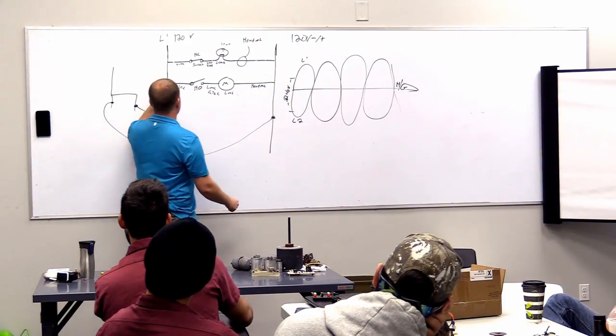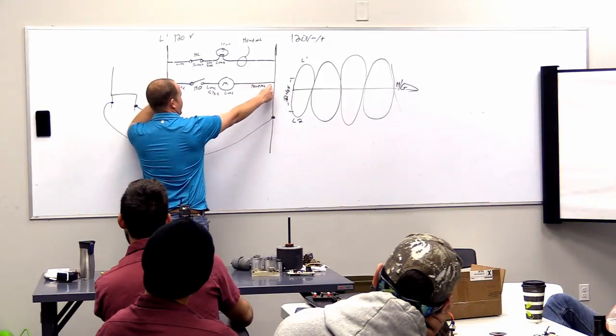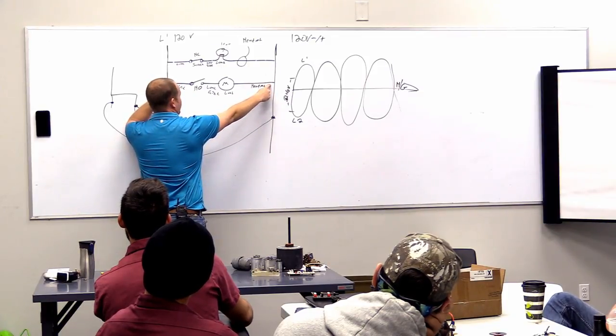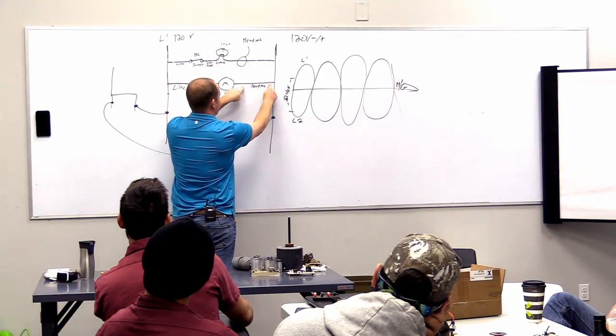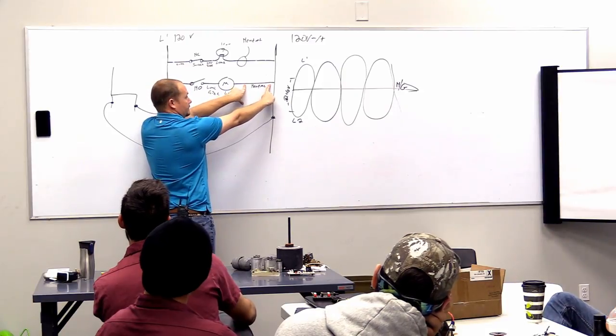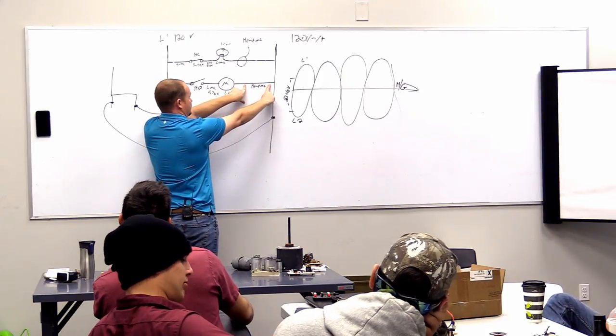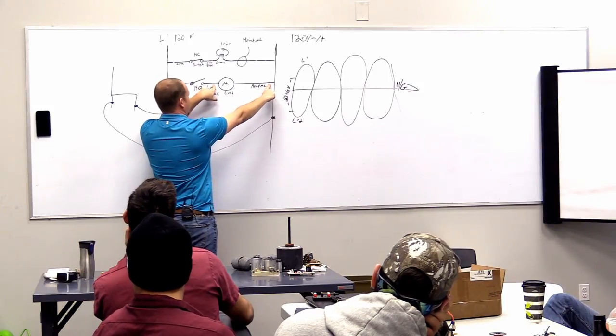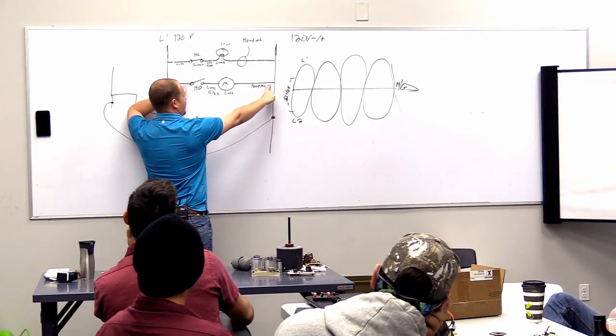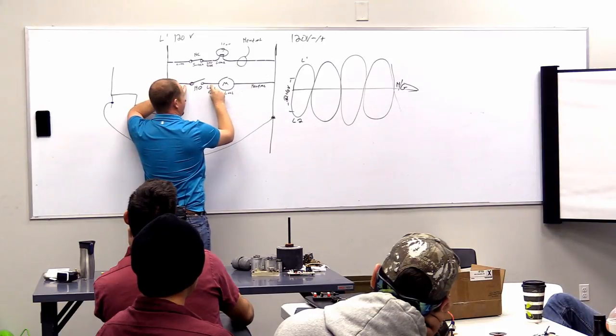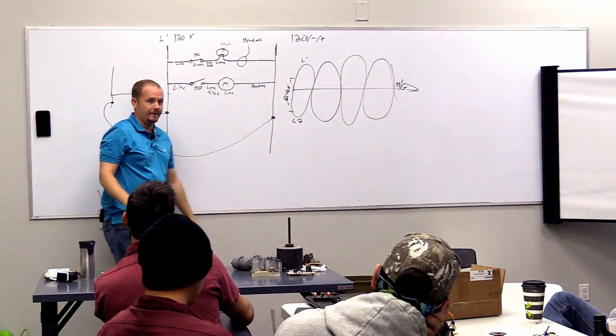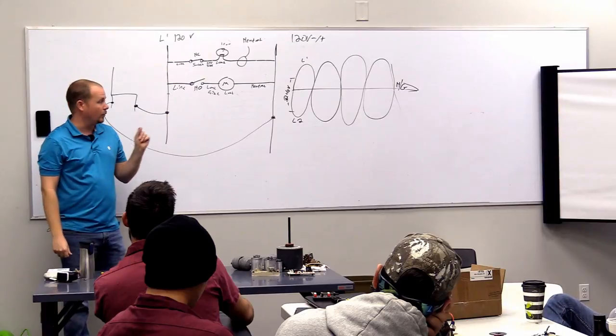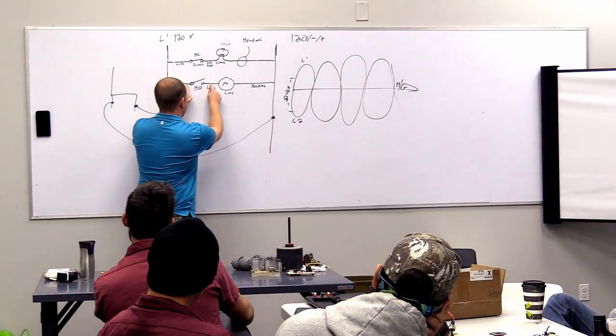So what happens if I read between here and here? What do I read? I read 120 volts. What happens if I read between here and here? What do I read? Zero. They're electrically the same, right? What happens if I read between here and here? What do I read? Zero. What happens if I read between here and here? What do I read? What happens if I read between here and here? What do I read? Okay. That's correct. You do read 120.